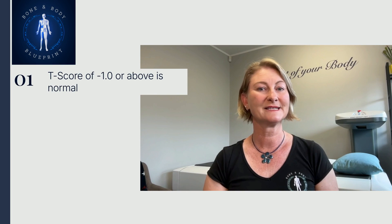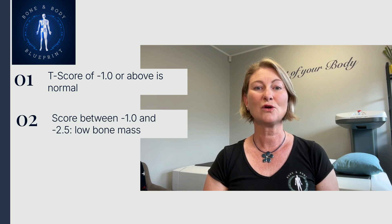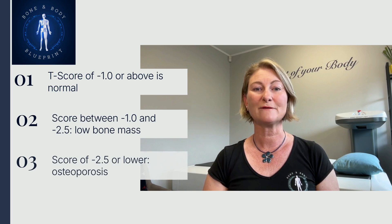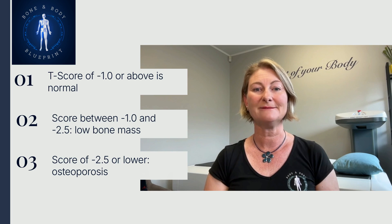A T score of minus 1.0 or above is considered normal, while a score between minus 1.0 and minus 2.5 indicates low bone mass, known as osteopenia. A score of minus 2.5 or lower suggests osteoporosis, highlighting the need for medical intervention.